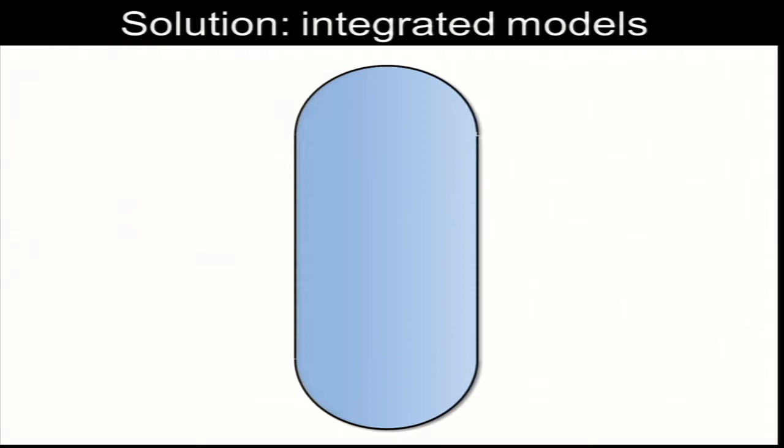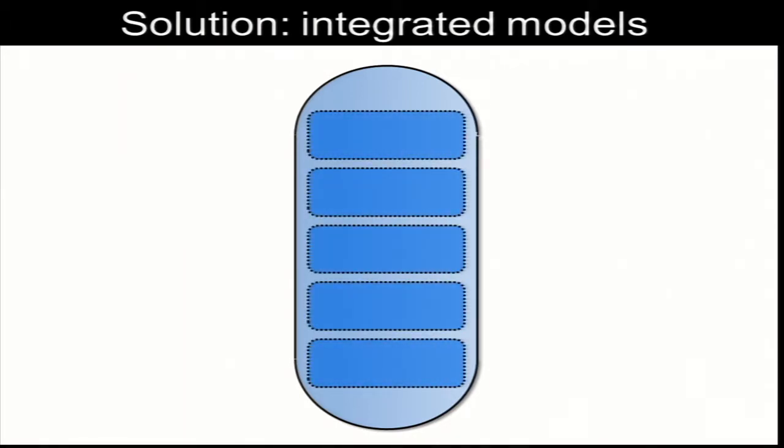The solution that we've been pursuing in the field is to take what we call an integrative approach. The basic idea is that we can model a whole cell by breaking it down into submodels, each of which represent different physiological processes. We can model each of these processes using different mathematics. We can build a flux balance analysis model of metabolism at the same time that we use ordinary differential equations to model cell division, and we can take stochastic approaches to model transcription or translation.